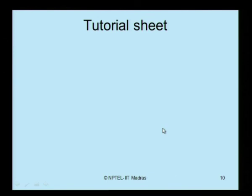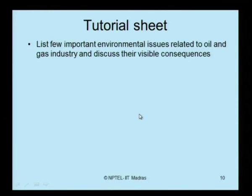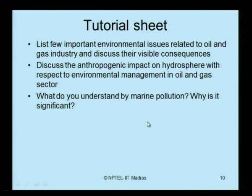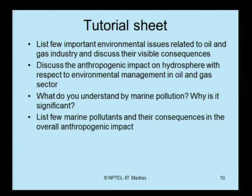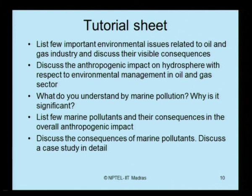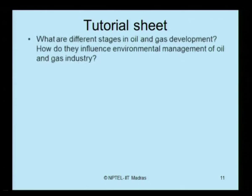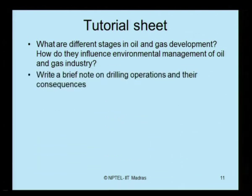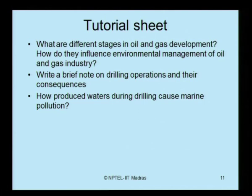This is the tutorial sheet for module 2, with questions based on the lectures given in this module. Topics include: listing important environmental issues related to the oil and gas industry and discussing their visible consequences; anthropogenic impact on the hydrosphere in environmental management; marine pollution — its significance, marine pollutants, and their consequences; different stages in oil and gas development and their influence on environmental management; a brief note on drilling operations and their consequences; and how produced waters during drilling can cause marine pollution.